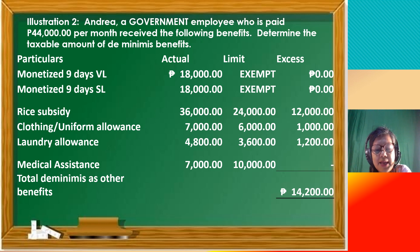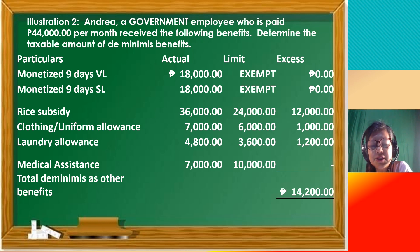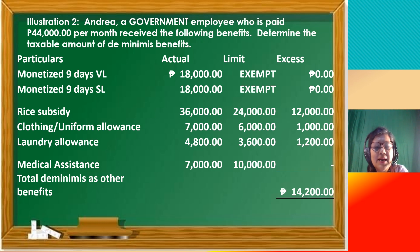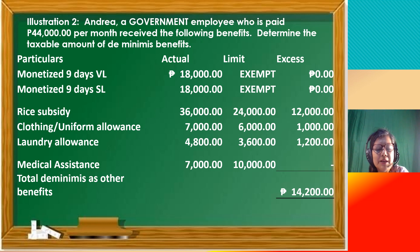Rice subsidy remains the same: 36,000 minus 24,000 is 12,000. Clothing: 7,000 minus 6,000 is 1,000. Laundry allowance: 4,800 versus 3,600, so 1,200. Adding them all: 12,000 plus 1,000 plus 1,200 equals 14,200. So the total de minimis as other benefits for Andrea as a rank and file government employee is 14,200 — compared to 32,200 as a private sector employee, a difference of 18,000.